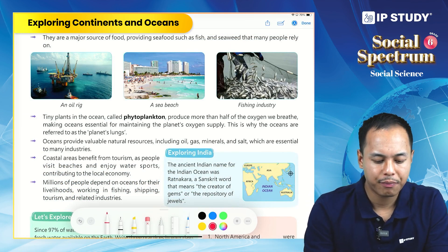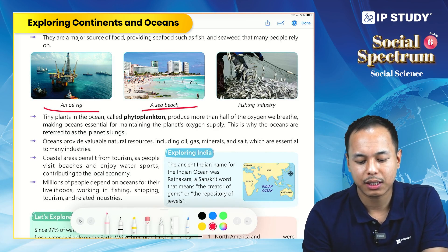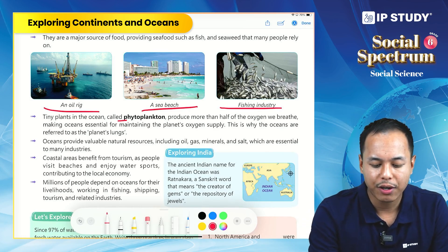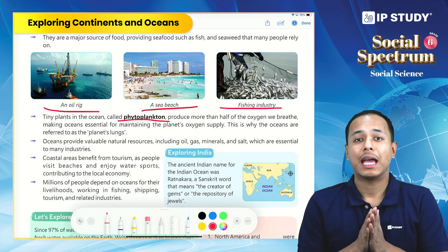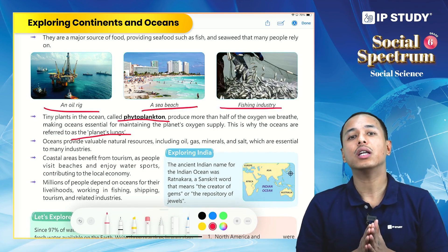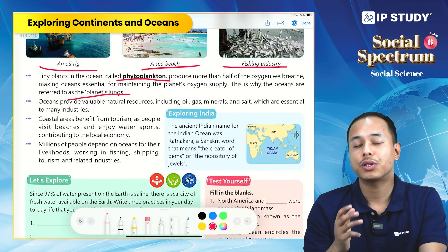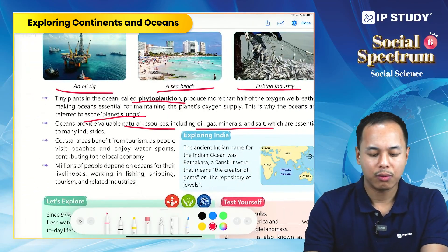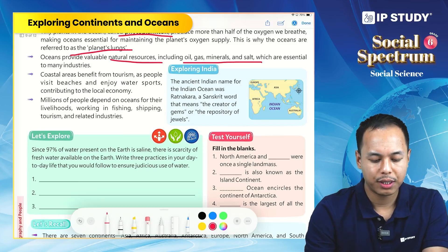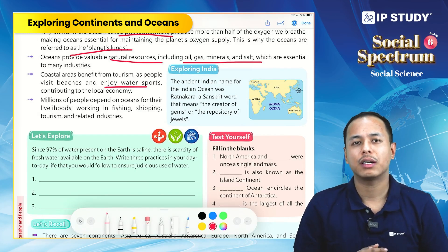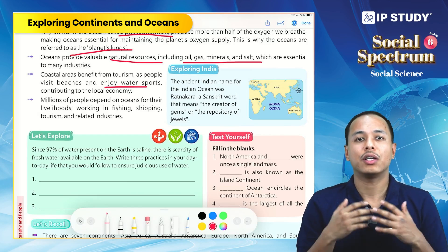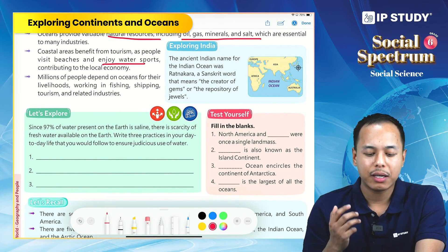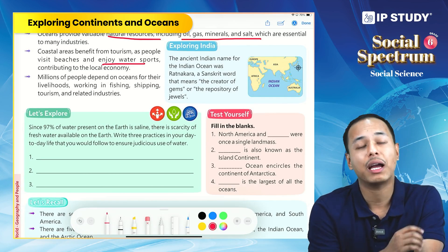Oil rigs and the fishing industry are examples of human activity that relies on the ocean. Phytoplankton provides oxygen to breathe, which is why oceans are also called our planet's lungs. Oceans also provide natural resources like oil, gas, minerals, and salt. Tourism is another major benefit — millions of people enjoy coastal destinations. Overall, millions of people depend on the ocean for their livelihood through fishing, shipping, tourism, and other related industries.